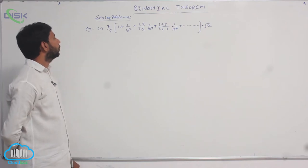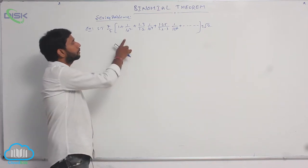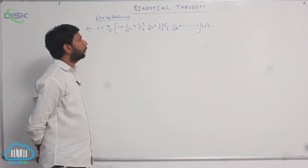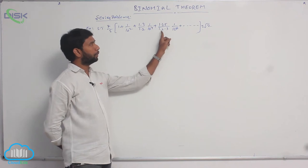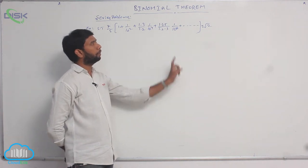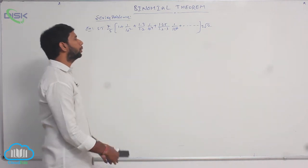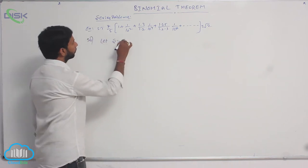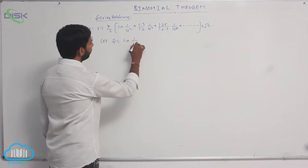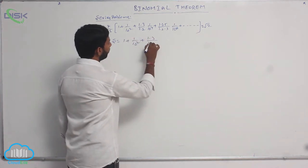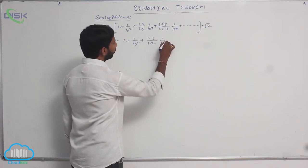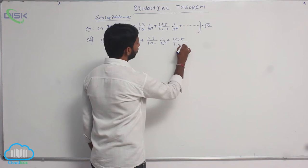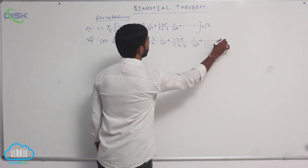The next example shows that 7/5 × (1 + 1/10² + (1·3)/(1·2)·1/10⁴ + (1·3·5)/(1·2·3)·1/10⁶ + ...) is equal to √2. Let us consider S = 1 + 1/10² + (1·3)/(1·2)·1/10⁴ + (1·3·5)/(1·2·3)·1/10⁶ + and so on.